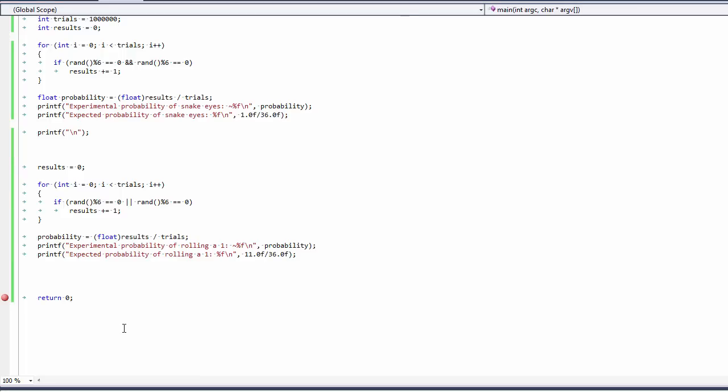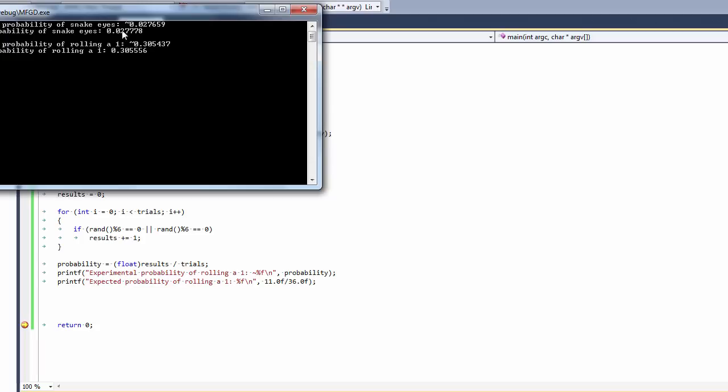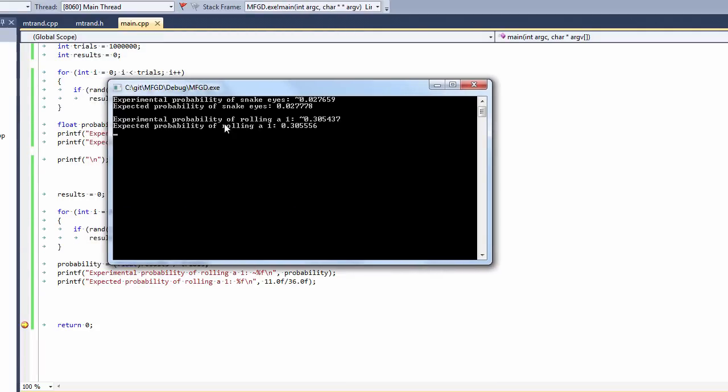And let's see what happens. Okay, the experimental probability of rolling a one is going to be 0.305437. We see that's very close to within a thousandth of 0.305556. And again, this should be five continuing forever, but it got rounded. So, good.